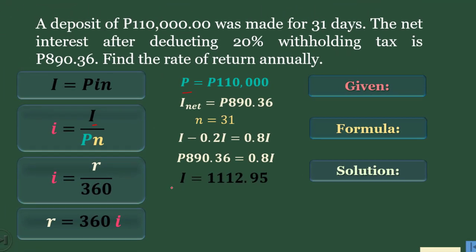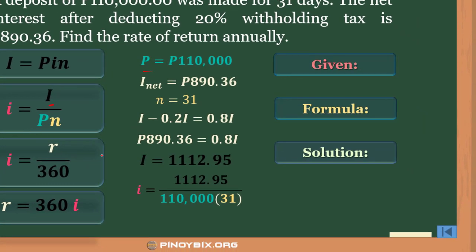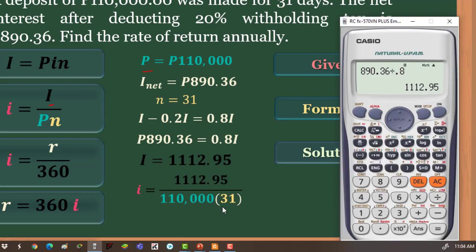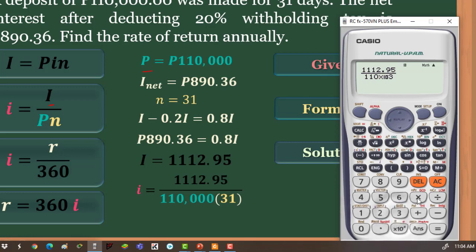Now we have I, P, and N, so we can solve for the daily rate of interest. We substitute the values: I equals 1112.95 over the product of the principal 110,000 times the number of interest periods 31. Using the calculator: 1112.95 divided by 110,000 times 31 gives us 3.2638 times 10 to the negative 4.